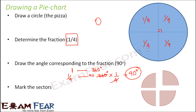So the concept used in drawing a pie chart is: first determine the fraction, then determine the angle corresponding to that fraction, so you can draw the pie chart accordingly. We will look at some examples for better understanding.